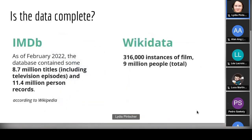Is the data complete? IMDB has 8 million movies and TV episodes and about 11 million people. Wikidata has about 316,000 instances of film recursively — a small fraction — and 9 million people total. So a lot of people who are in IMDB are not in Wikidata. The question is: if I reuse Wikidata, what am I missing? Is it the less famous people, or what?